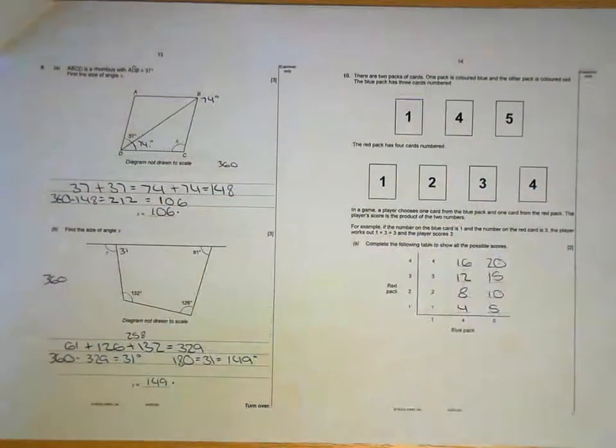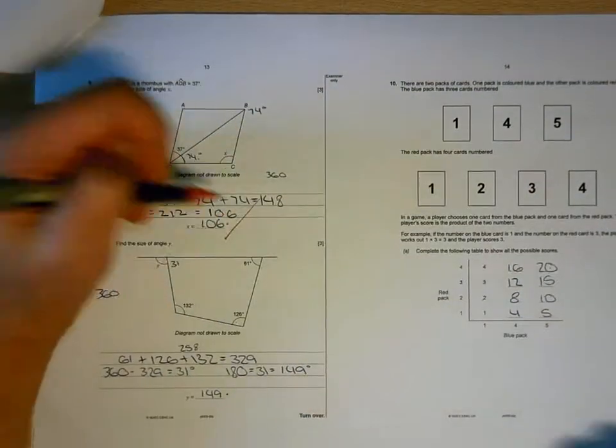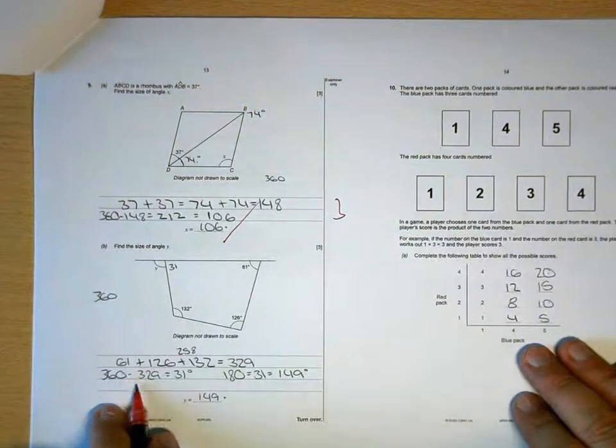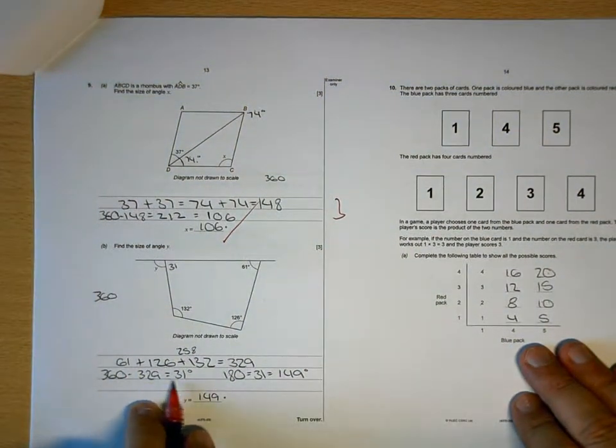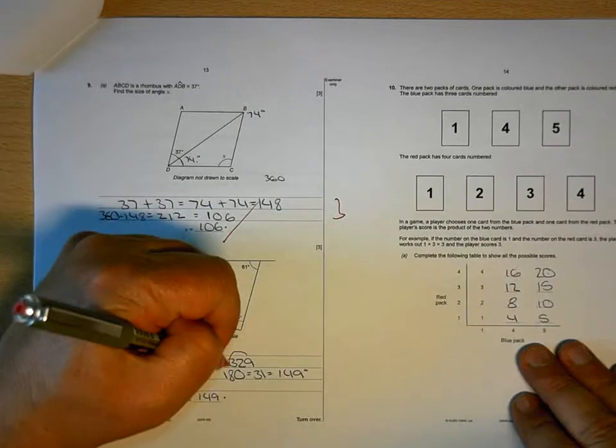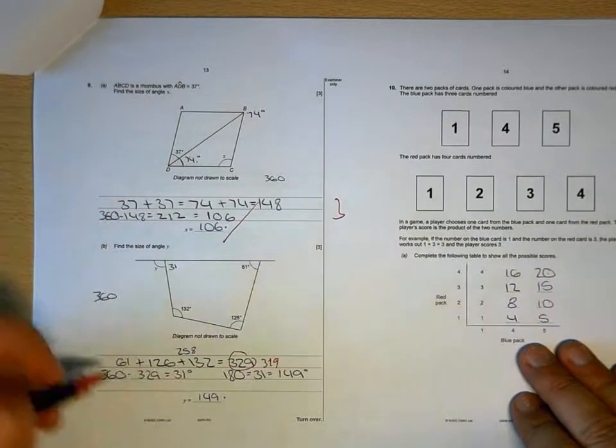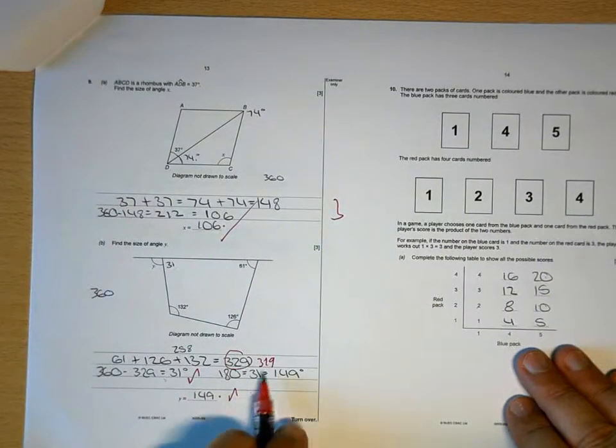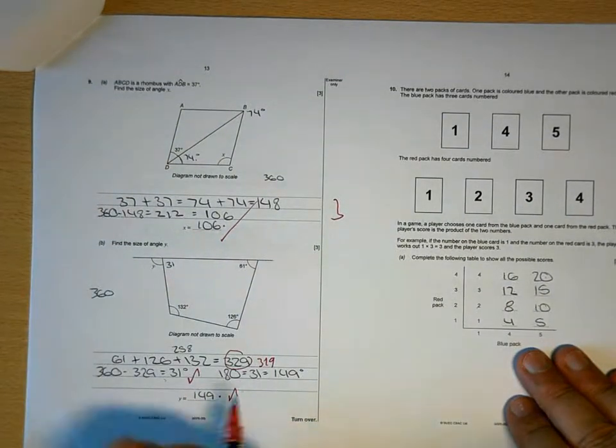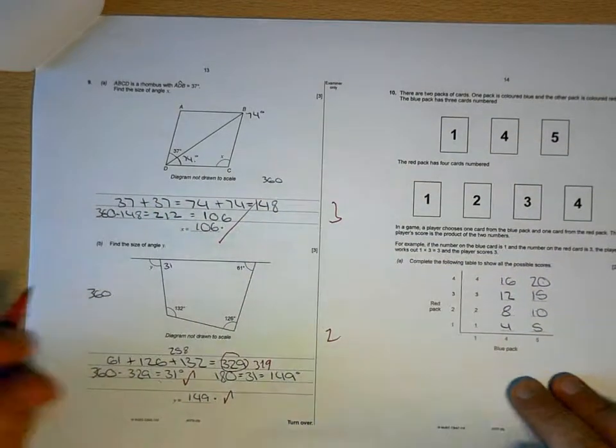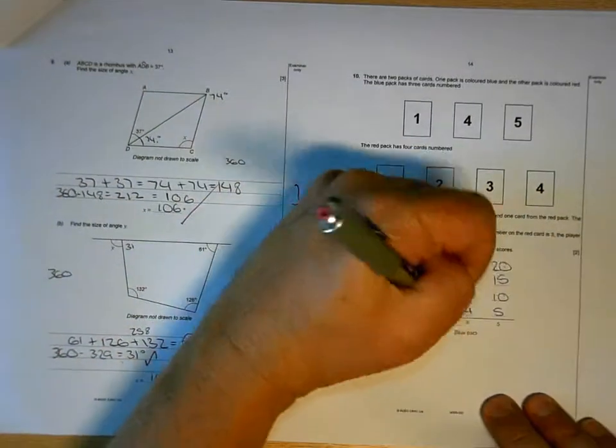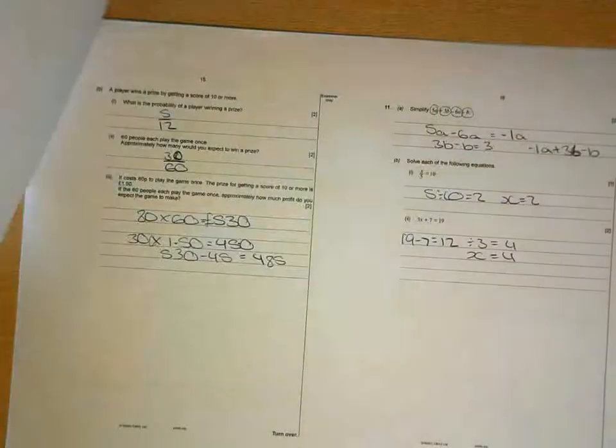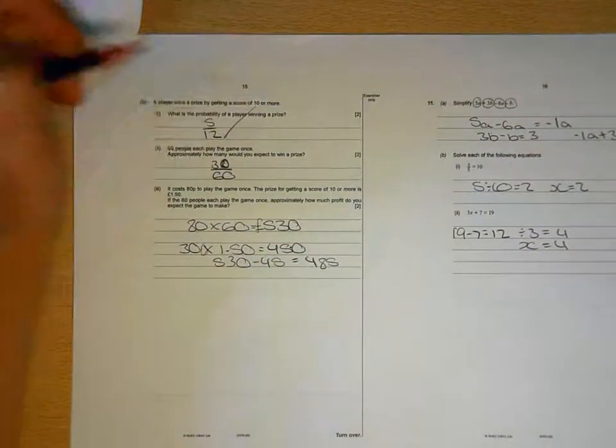106 is correct, well done. Now for this one, you're adding them up and you've added them up incorrectly, it's 319 unfortunately. But for your incorrect answer, because your workings out are wrong, you made one mistake there, you'll get 2 out of 3. That's good, 7 for the page.